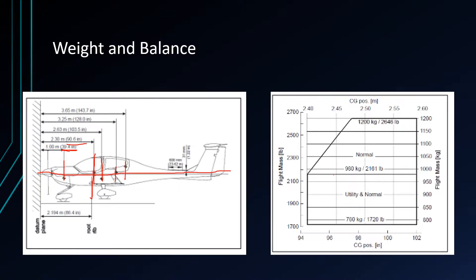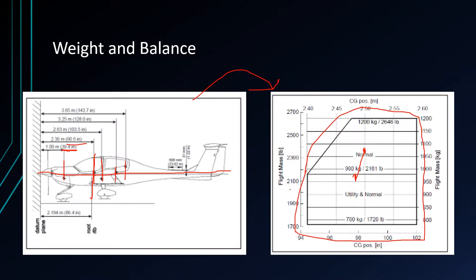Now on the right, this is our final form — this is where we're going to plot our numbers once we figure them out. If the center of gravity is here for takeoff and landing and it's within this little box, that's good. If our numbers lay outside of the box, that means we can't fly because the aircraft is out of weight and balance.